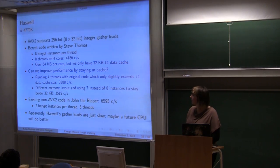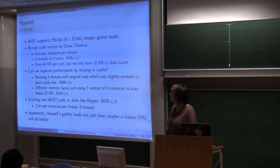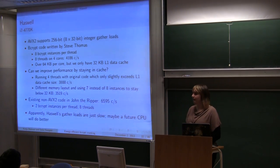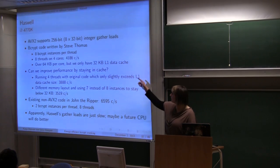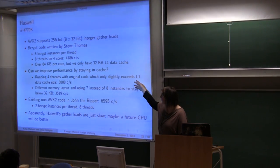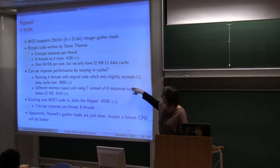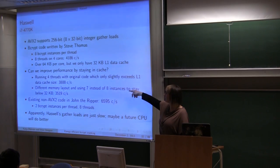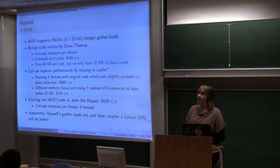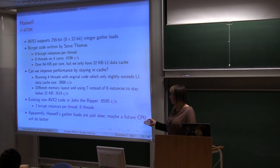So we also tried Haswell with its AVX2 intrinsics. The first code was written by Steve Thomas with the following performance. But it was exceeding data cache size. Because it was using 8 instances per core which is more than 32 kilobytes. So we tried to stay in cache and to reorganize the code. So we reorganized, changed memory layout and using 7 instead of 8 instances which resulted with this performance. But non-AVX2 code in John the Ripper is actually much faster than using AVX2 and its gather loads. So we can conclude that gather loads are just slow. And we hope that the future CPUs will do better.